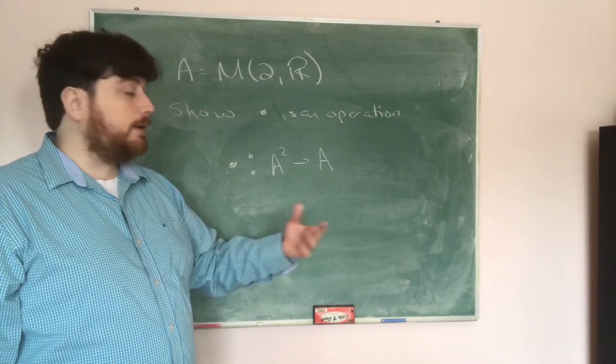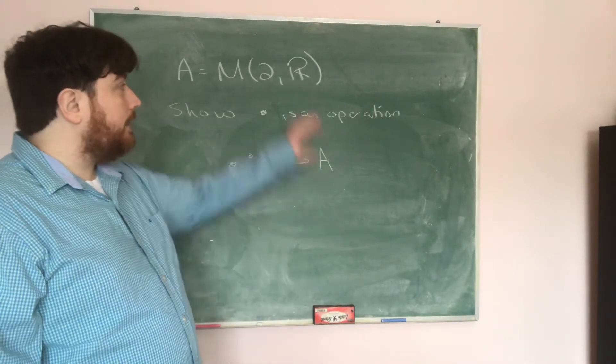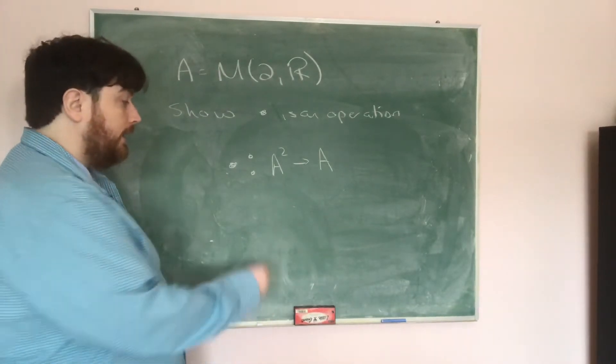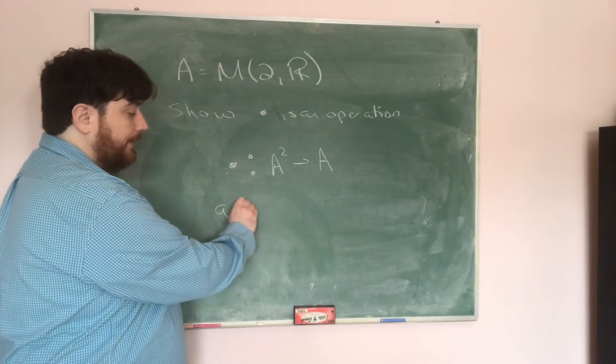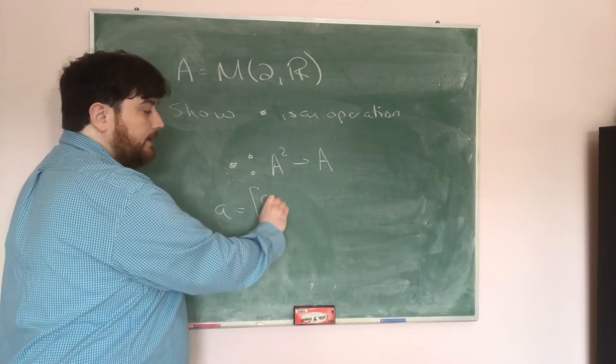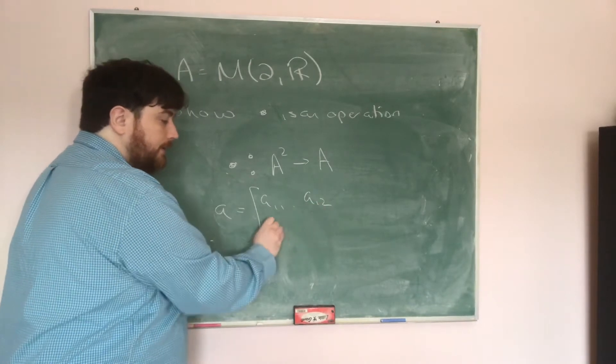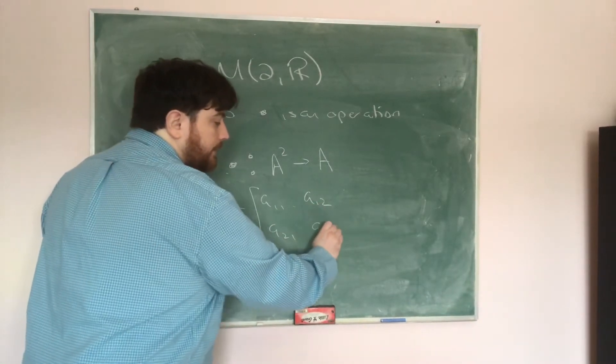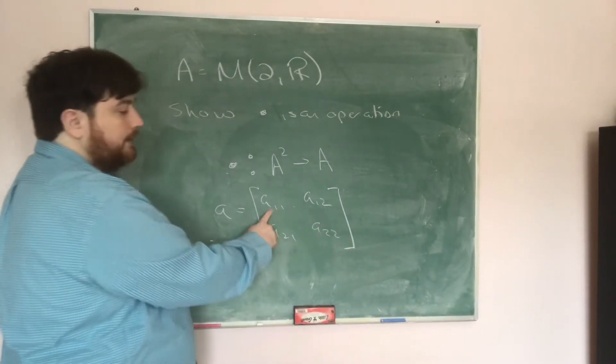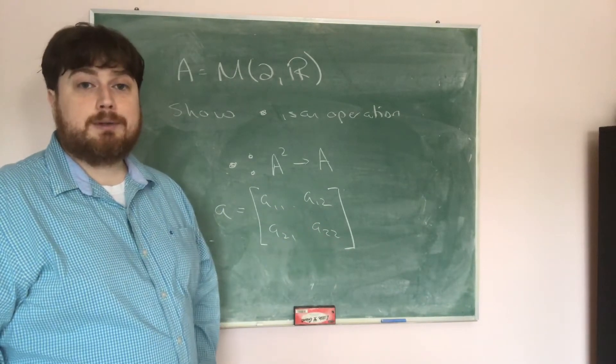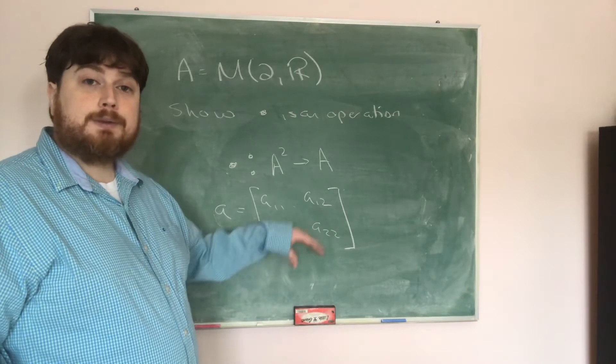What I want to think about is what do things in A look like, or what do 2 by 2 matrices look like? So let A be an element of A. Then that's going to be a 2 by 2 matrix: A sub 1 1, A sub 1 2, A sub 2 1, A sub 2 2, where each of these entries are real numbers. We're going to have a matrix with real entries.